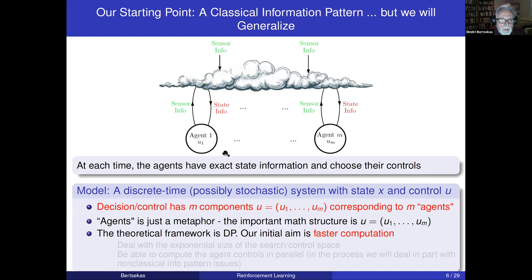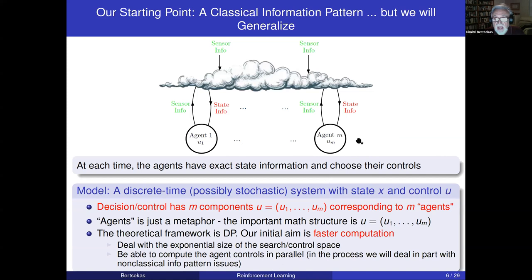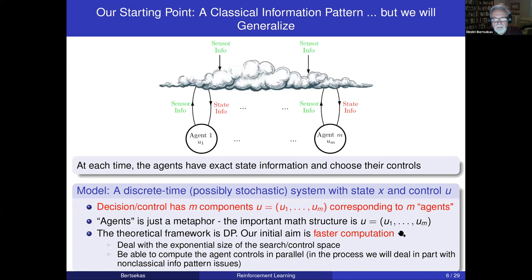The theoretical framework is dynamic programming, and the initial aim is faster computation. The computation is quite daunting because the search space is enormous with several agents. We'll deal with the exponential size of the search and control space. Additionally, the agents have to pick their controls at each time, and it would be nice if they could do so in parallel rather than in sequence to get a parallelization speedup. We're going to see ways to do that, and in the process make a connection with non-classical information pattern issues, starting from an easy problem with the simple objective of making computation fast.